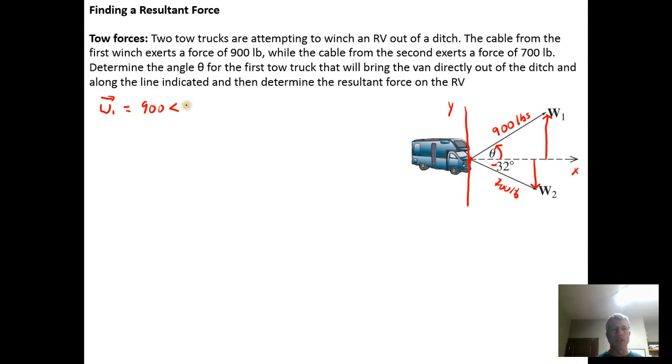So we know from trigonometry that we can get a unit vector in this direction by taking the cosine of theta and the sine of theta. This gives us a vector on the unit circle, a vector of length one, and then we just scale it out with the 900 pounds of force that's being exerted by the cable.